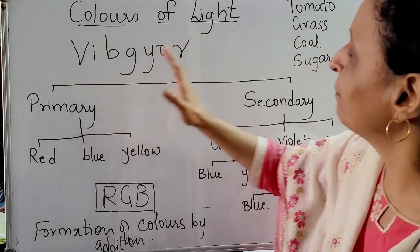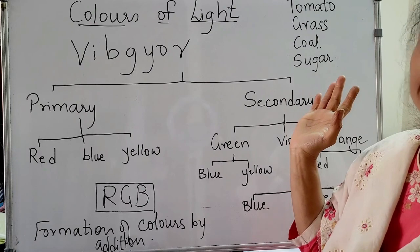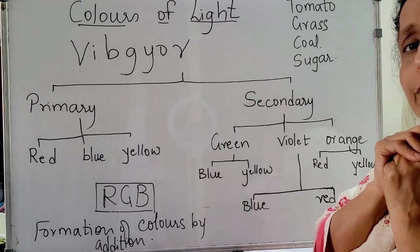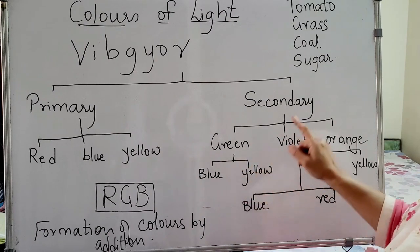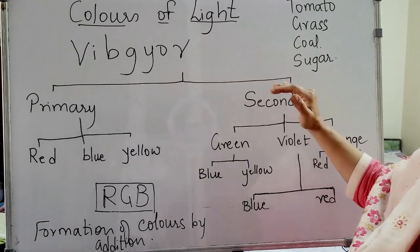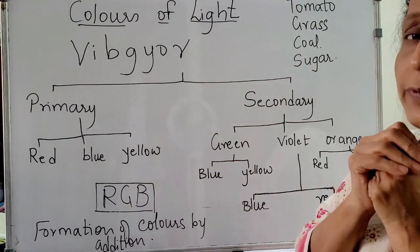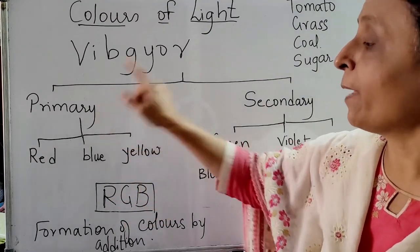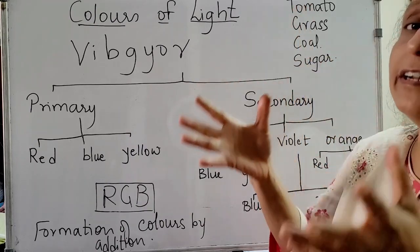Light can be divided into primary and secondary colors. The primary lights are red, blue, and yellow — they are not formed by the combination of any other colors. Secondary lights are formed by the combination of various colors: green is formed by blue and yellow, violet by blue and red, and orange by red and yellow. Nowadays, TV screens use red, green, and blue to form different colors — you can see on screen a combination of red, green, and blue. So red and blue are primary and green is secondary; they combine further to form different colors.